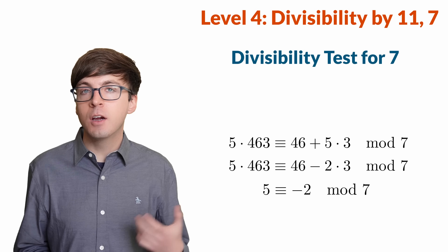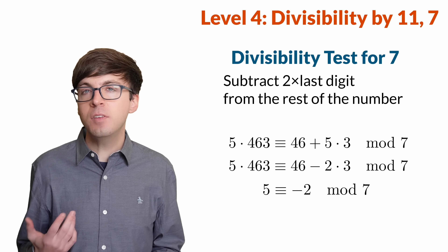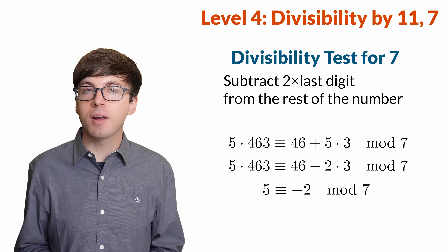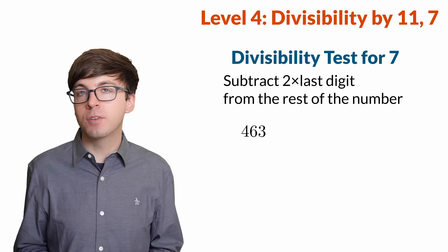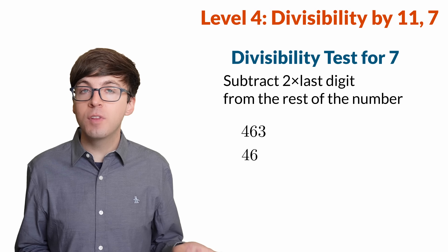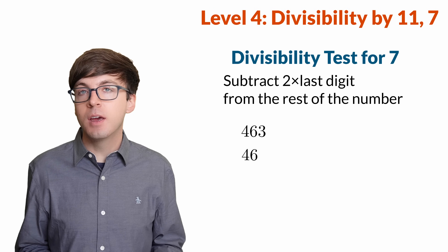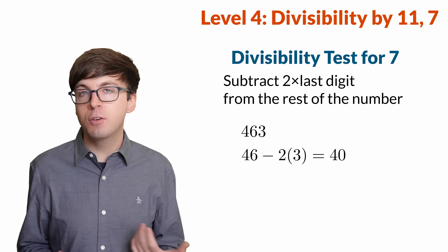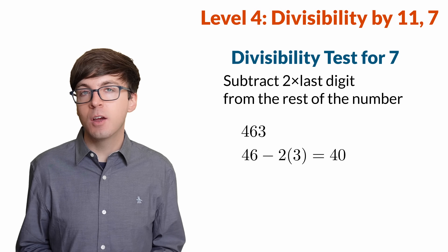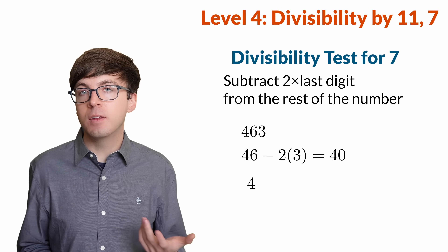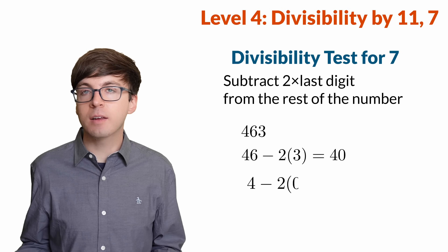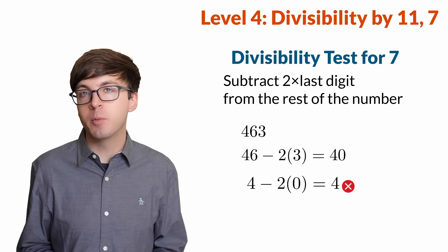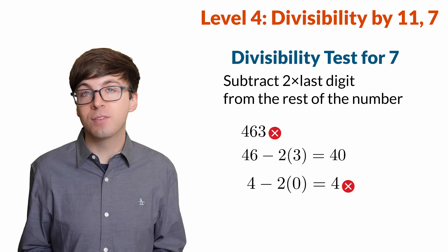So we can adjust the rule to be: remove the final digit, then subtract 2 times the final digit. Let's give this a try. The original number is 463. We remove the last digit to get 46, but then subtract 2 times 3, giving us 40. You can repeat this trick: remove the last digit, leaving us with 4, and subtract 2 times 0. We're left with just 4, which is not divisible by 7, so neither is 463.